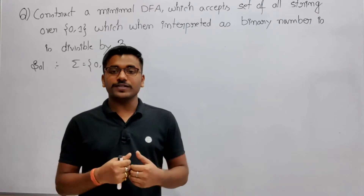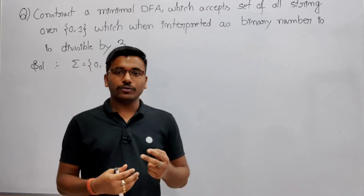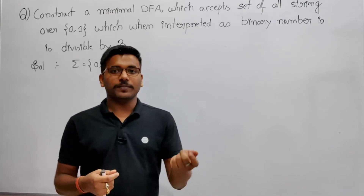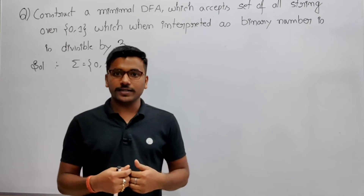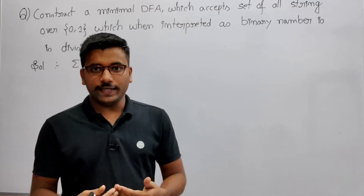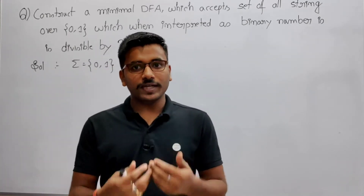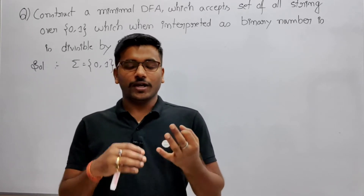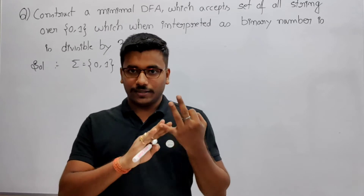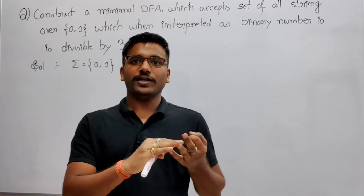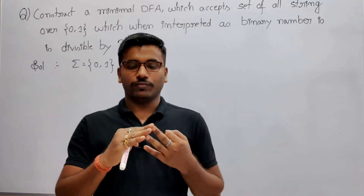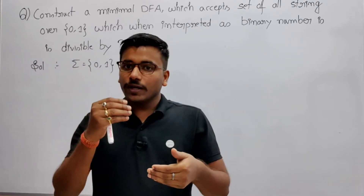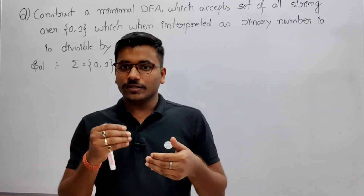In the previous problem it was divisible by 2, so when divisible by 2 we required 2 states — one state indicating remainder 0 (Q0) and another state indicating remainder 1. Now when you divide any number by 3, you get 3 remainders, so you require 3 states: one for remainder 0, another for remainder 1, and another for remainder 2.